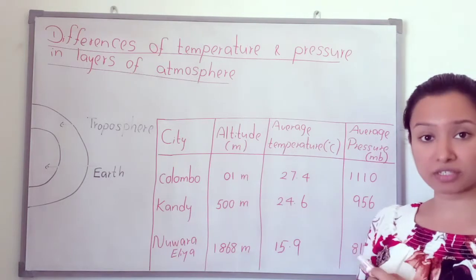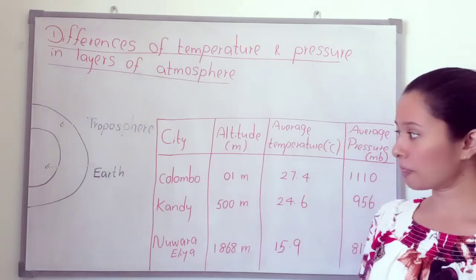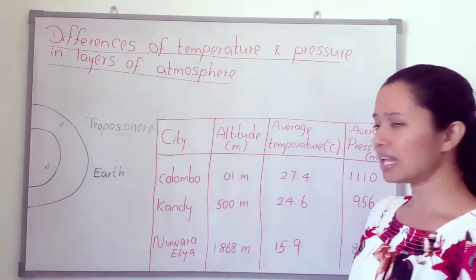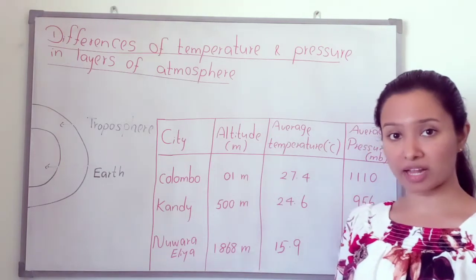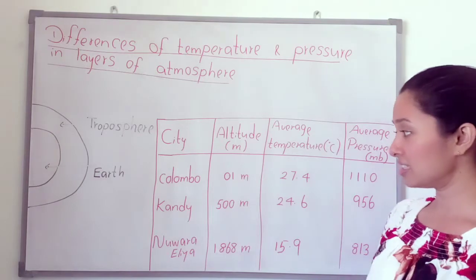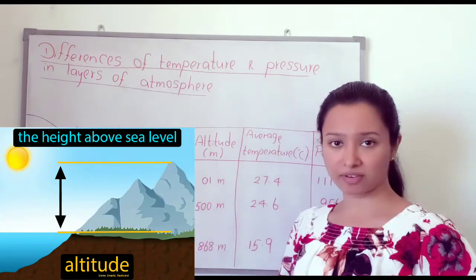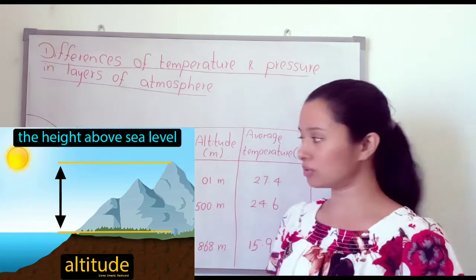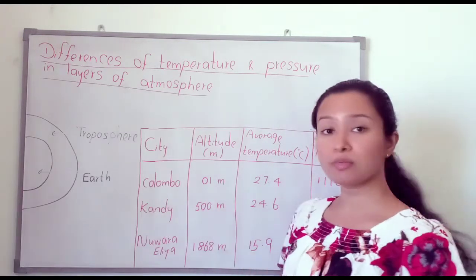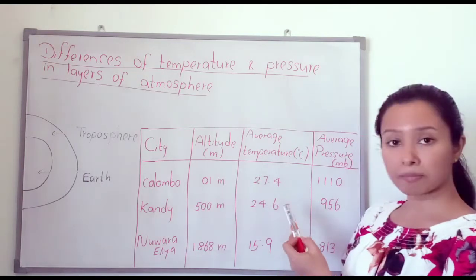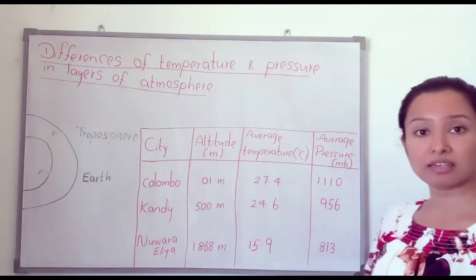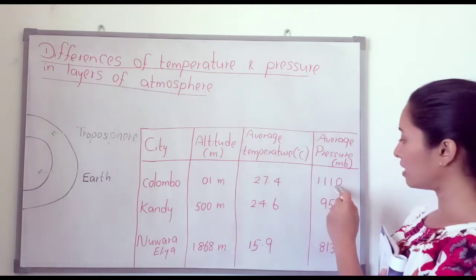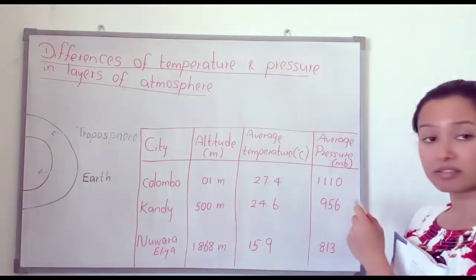What are the temperature and pressure differences in these cities — Colombo, Kandy, and Nuwara Eliya? Here we can see the altitude, which means the height of a certain place from sea level. For Colombo, the altitude is 1 meter, the average temperature is nearly 27°C, and the average pressure is 1110 millibars.